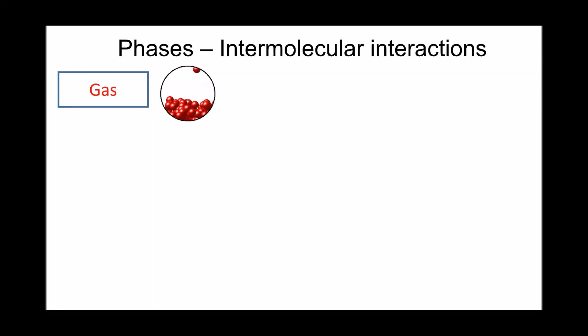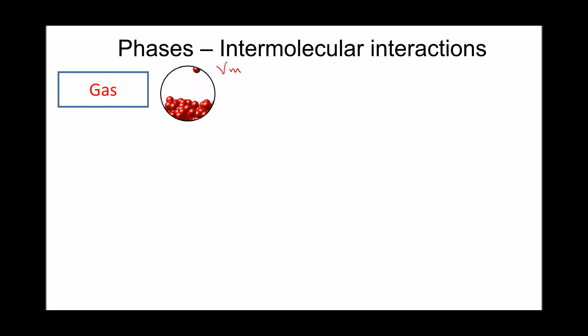We had two basic assumptions for an ideal gas. First, molecules have zero volume — the volume of the molecules is virtually zero. Second, they have zero intermolecular interactions, meaning there is no attraction or repulsion between the molecules.